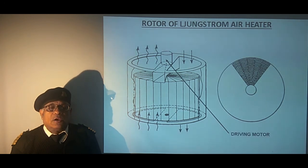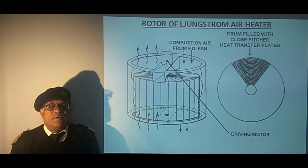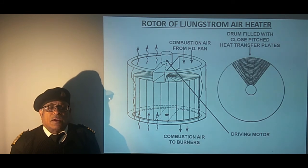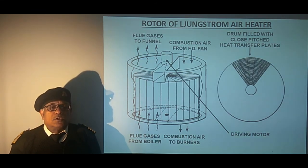First of all we have the driving motor rotating this rotor through reduction gearing at a very low rpm. Then it is shown that very close pitched plates are fitted in this rotor which are in segments. The combustion air from FD fan comes from the right side of the rotor passage and it goes to the burner. On the other hand the flue gas which is entering from the bottom on the left side it passes up to the funnel. So when the rotor gets heated through the passing in the flue gas passage it gives its heat to the air and thus the air gets heated and goes to the burner.